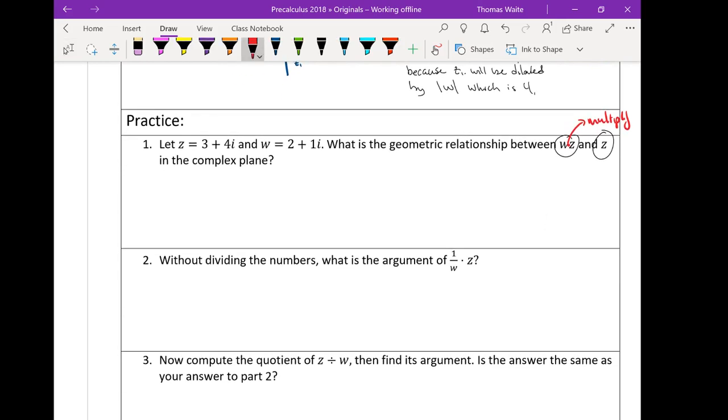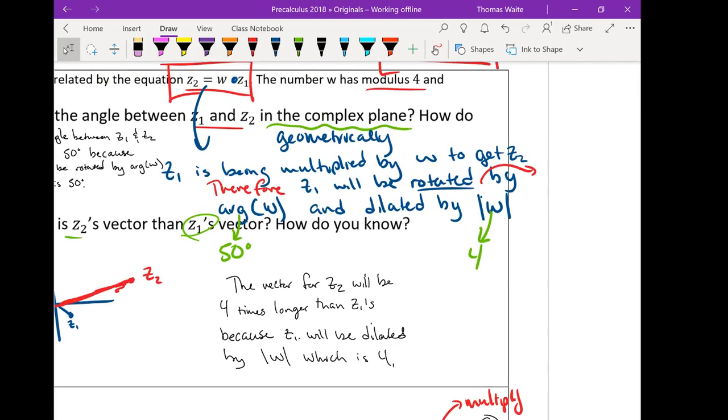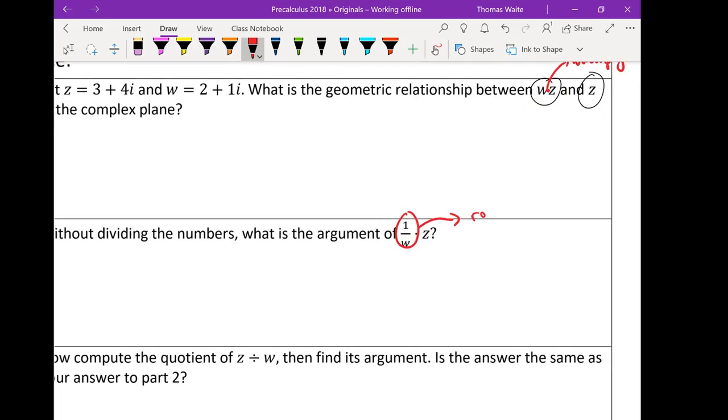Without dividing the numbers, what's the argument of 1 over W times Z? We didn't talk explicitly about dividing, but if multiplying rotates counterclockwise, I guess I could add up here, we rotated counterclockwise positively. When we're dividing a number, we're just inverting that. We're going to be rotating clockwise. And then instead of dilating by the modulus of W, we're going to be dilating by 1 over the modulus of W. We're going to be like, instead of multiplying by a factor of 4, we'll be scaling it down by a factor of 4. We're dividing it down by a factor of 4.